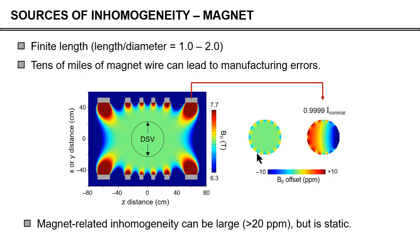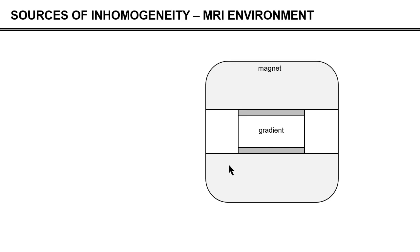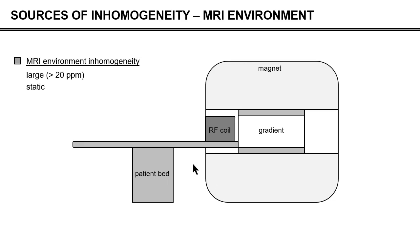Magnet-related inhomogeneity can be large, but fortunately it is typically static — it doesn't change over time. Other things that introduce inhomogeneity are the environment in which the magnet is standing and the stuff that we put into it. The gradient coil introduces some inhomogeneity, the patient bed moves and introduces inhomogeneity, and the RF coil and metal beams around the magnet all introduce some level of inhomogeneity. But again, those are also fairly static, and this requires a one-time compensation during the installation of the magnet.